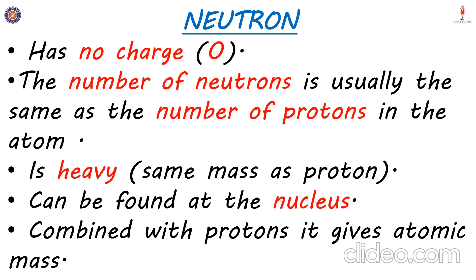The neutron, just like the proton, is found at the center of the atom — the nucleus — and combined with the protons it gives the atomic mass. The mass of the electron is not included in the atomic mass as it is so much lighter and does not cause any significant change. The protons and neutrons, being much heavier, contribute to the atomic mass. So the atomic mass of an element is the mass of a proton times the number of protons, plus the mass of a neutron times the number of neutrons.